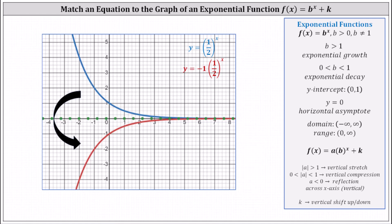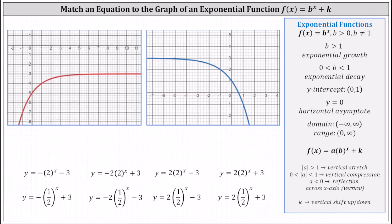There should be enough information for us to match the correct equation to the given graphs. Looking at the graph on the left, first notice the horizontal asymptote is y equals negative three, which means the graph has been shifted down three units. Neither graph resembles the basic exponential growth or decay functions because both have vertical reflections. If we reflect the left graph vertically, the shape would resemble exponential decay — indicating the left graph is exponential decay with a vertical reflection.